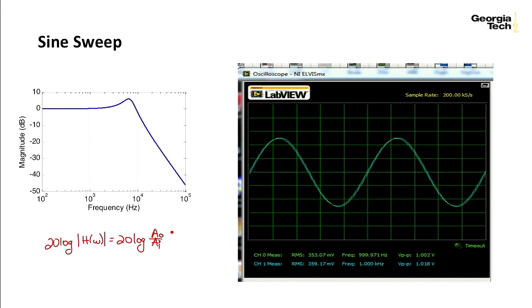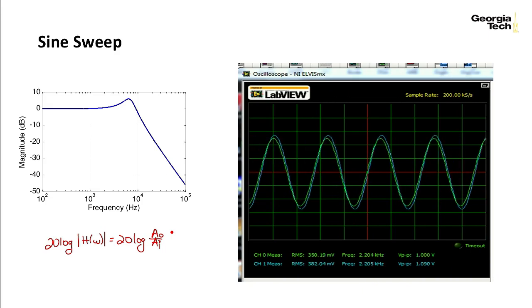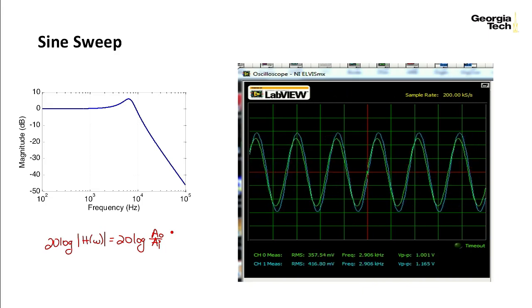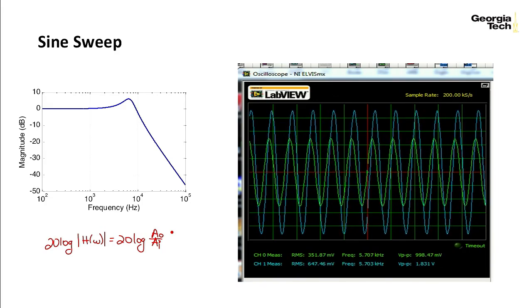If I increase the frequency of the input very slowly in a sine sweep, see I'm increasing the frequency, and you see what's happening to the output amplitude. It's getting bigger, and it's getting really big right here.